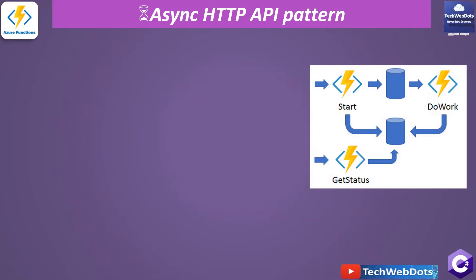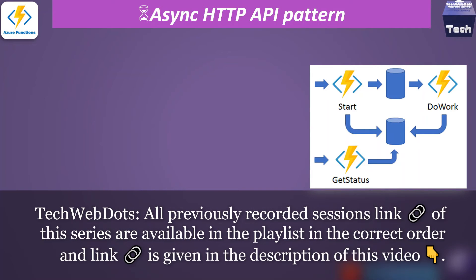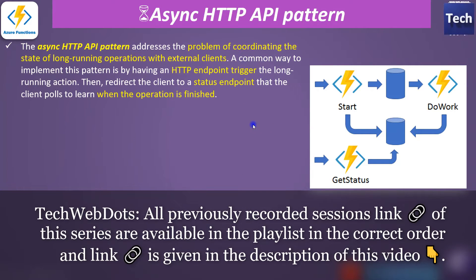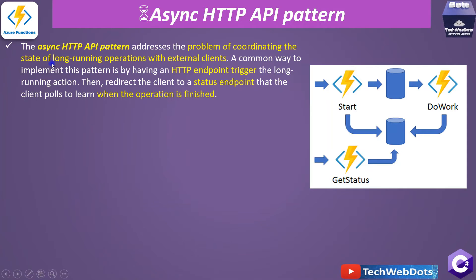The async HTTP API pattern — as per Microsoft this image is given. It may look a bit confusing but trust me, after my explanation you will feel comfortable. The async HTTP API pattern addresses the problem of coordinating the state of long-running operations with external clients. The important scenario is when you have a long-running operation with an external client.